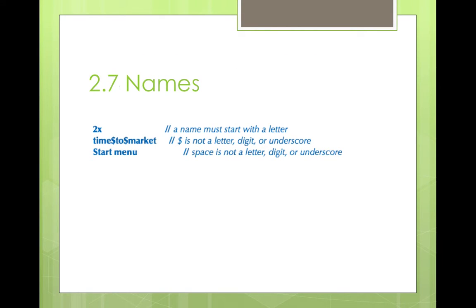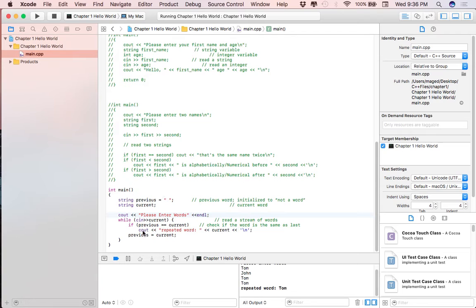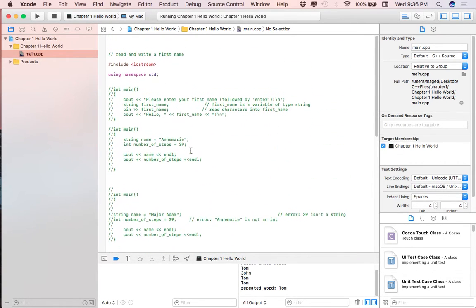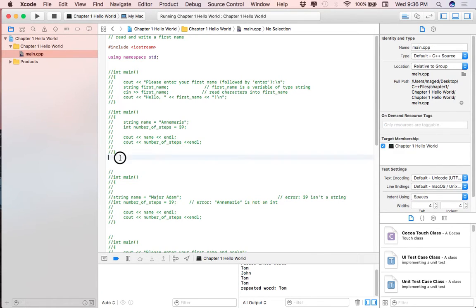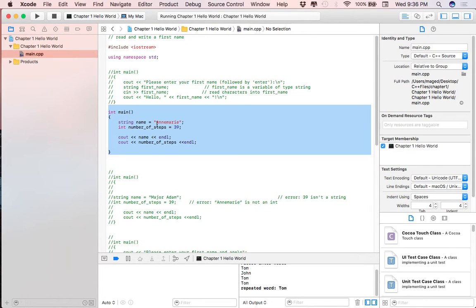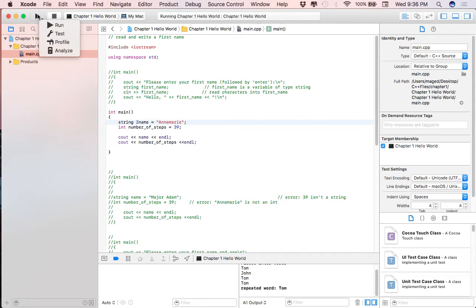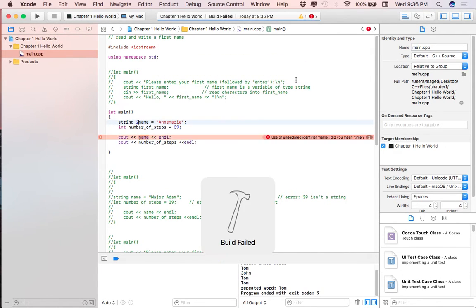Now for naming rules. A variable name must always start with a letter and contain only letters, digits, and underscores. Starting with a number violates C++ rules. Using a dollar sign is not a letter, digit, or underscore so it should cause an error. A space in a name also won't work. Let me try it out - starting with a number gives 'unexpected qualities' error. Starting with an underscore also gives an error in some compilers.